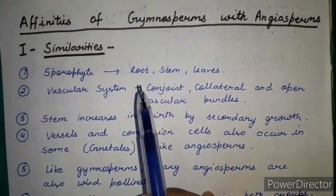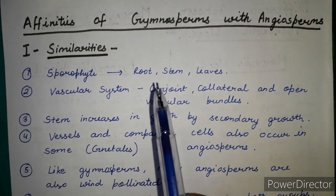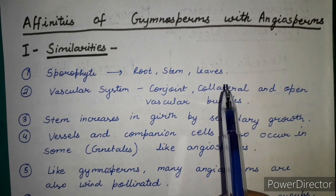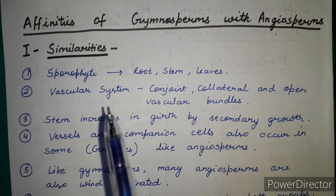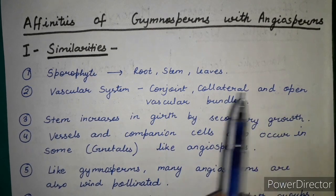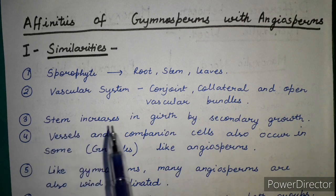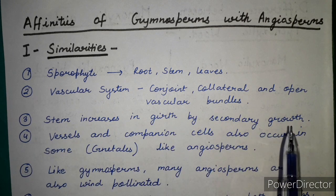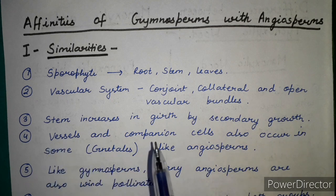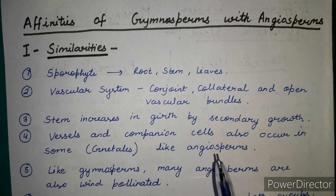To summarize the similarities: gymnosperms and angiosperms both have roots, stems, and leaves. Their vascular system is very similar — conjoint, collateral, and open vascular bundles are present in both. Gymnosperms and angiosperms both show secondary growth. Vessels and companion cells are present in Ephedra (Gnetales) and in angiosperms.